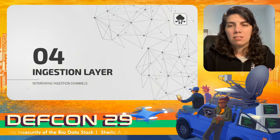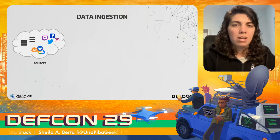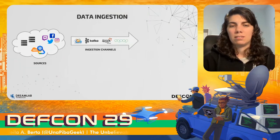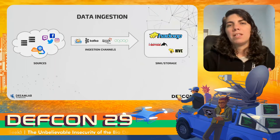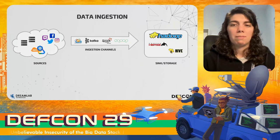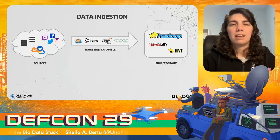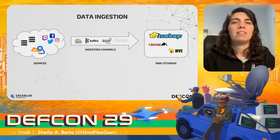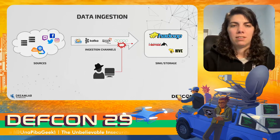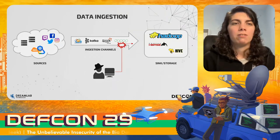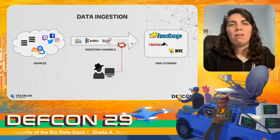Let's take a look at the ingestion layer. In our big data architecture example, data from sources is ingested to the cluster using data ingestion technologies. These include streaming-focused tools like Flume, Kafka, and Spark Structured Streaming, and batch tools like Sqoop that ingest static information — for example, from one database to a data lake. From a security perspective, we need to make sure that the channels through which information flows from source to storage are secure. Otherwise, an attacker might interfere with those channels and inject malicious data.